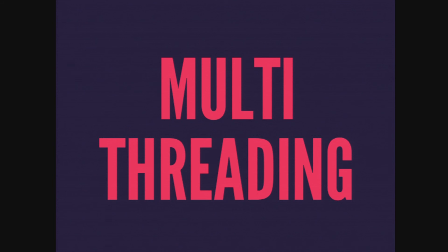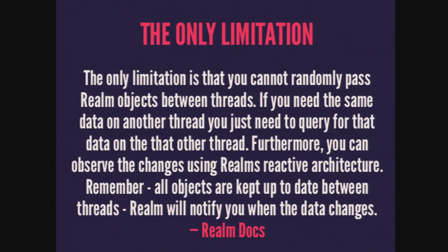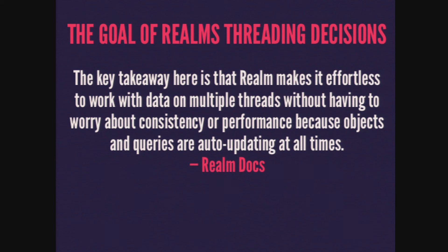For those familiar with Realm on Android, there's the question of multi-threading. The only limitation you'll run into is you can't randomly pass Realm objects between threads. You've probably seen this in async tasks — an ORM for SQL returns you an object you can pass across a thread boundary. You can't do that in Realm because of how it was architected. The key takeaway is it makes it effortless to work with data on multiple threads without having to worry about consistency or performance, because all those objects are auto-updating.